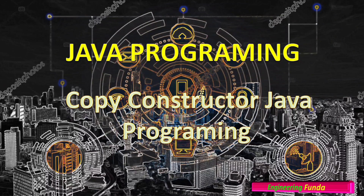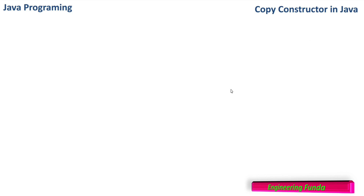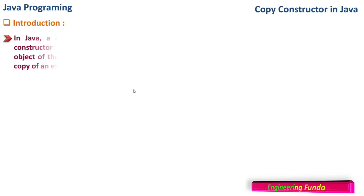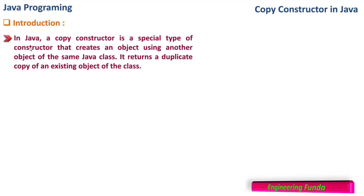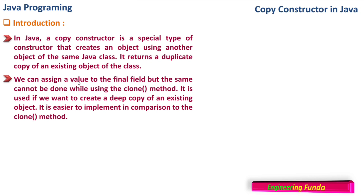That is the copy constructor in Java programming. In Java, a copy constructor is a special type of constructor that creates an object using another object of the same Java class. We have to remember that it is of the same Java class, because we are creating a copy — it returns a duplicate copy of an existing object. We can assign a value to the final field, but the same cannot be done using the clone method. In Java there is a method called clone where we can create a clone of an object.